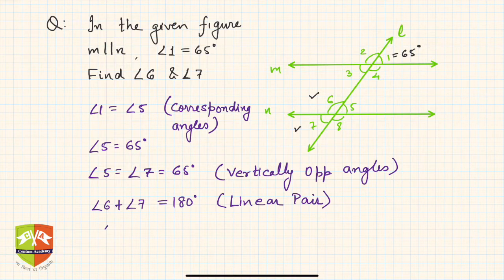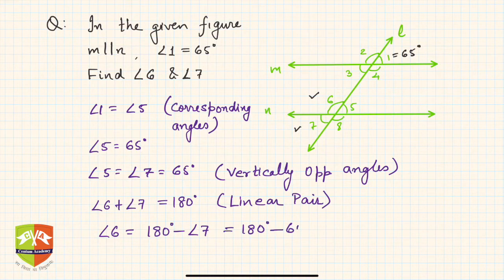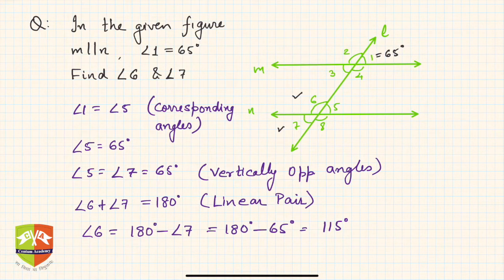That means angle 6 is 180 degrees minus angle 7, which is equal to 180 degrees minus 65 degrees, which is equal to 115 degrees. Okay, so these kinds of questions are easy guys.